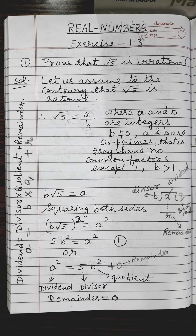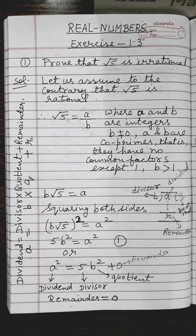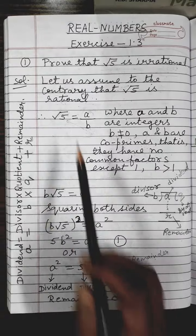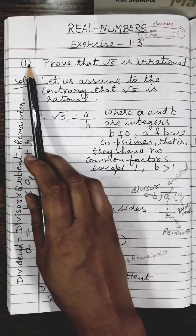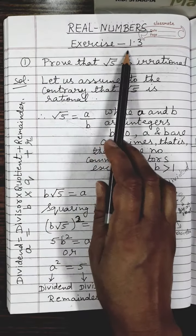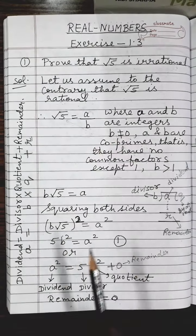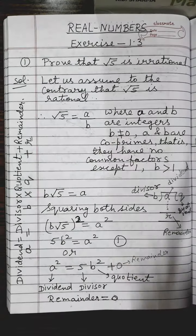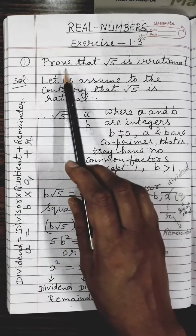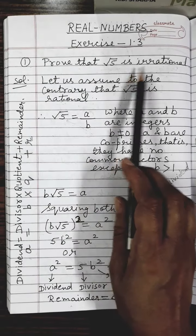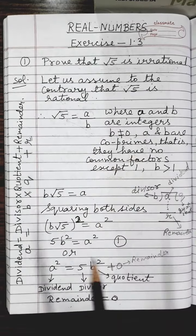Hello children, welcome to my channel Priya Gulati Maths. Today I will solve question number 1, exercise 1.3 from the real numbers chapter. The question says: prove that root 5 is irrational.